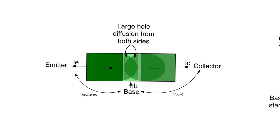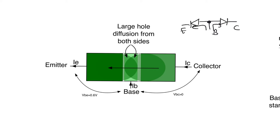In saturation, a BJT is going to have two junctions that are on and forward: the Base-Emitter junction and the Base-Collector junction. One thing that is actually kind of confusing is to think about the Base-Emitter and Collector as forward junctions and then to think of current flowing from the Base into both the Collector and the Emitter because you have a forward junction. This way of looking at saturation is confusing and is wrong.